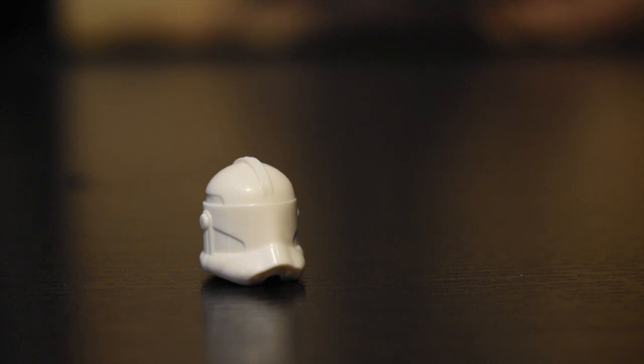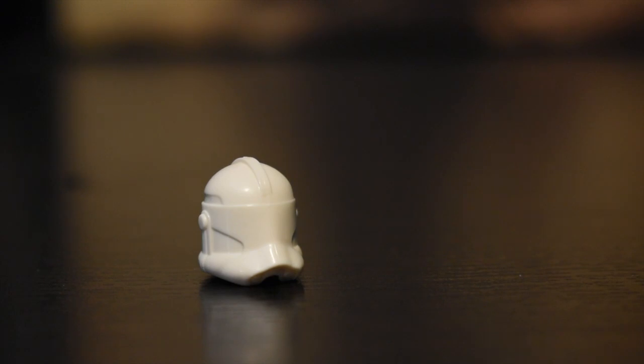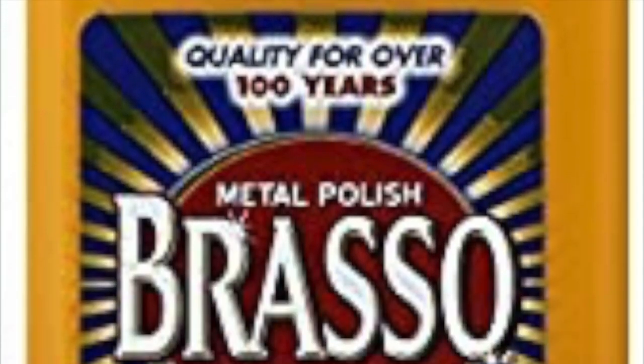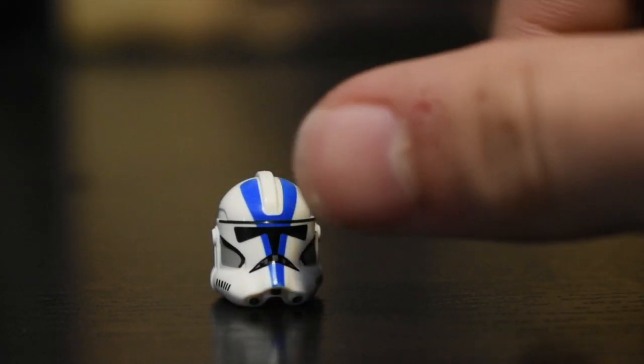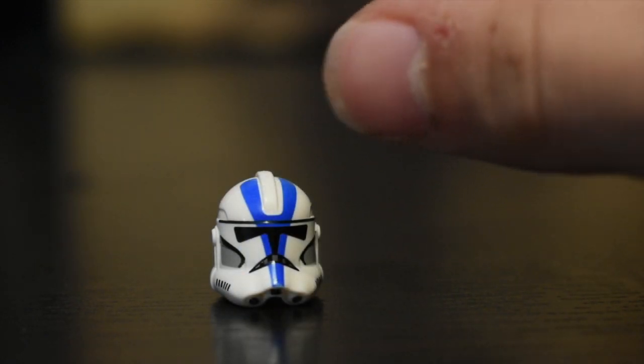As for the helmets, I just bought these awesome cheap knockoff ones off of Jonak Toys. Unfortunately, they are sold out right now. But if you wanted to remove printing from an official Lego helmet, you would pour brasso onto this helmet. Take like a paper towel, and then you would rub the helmet until the print came off.